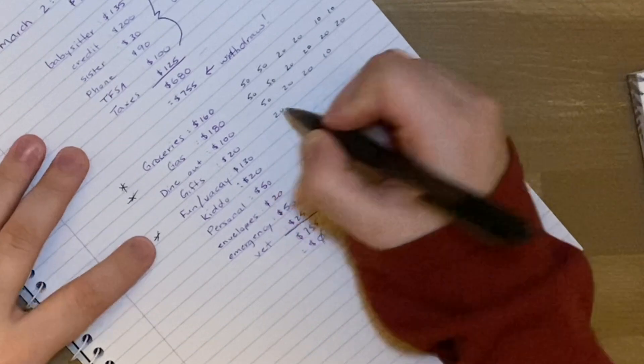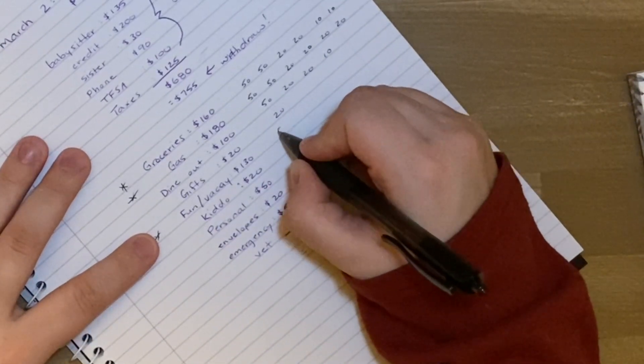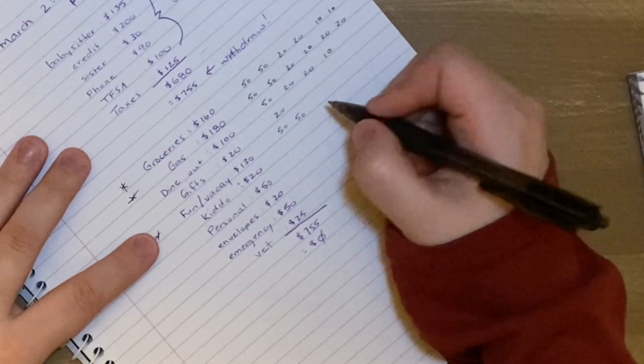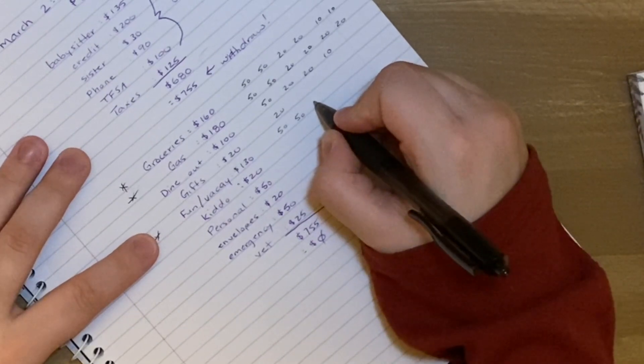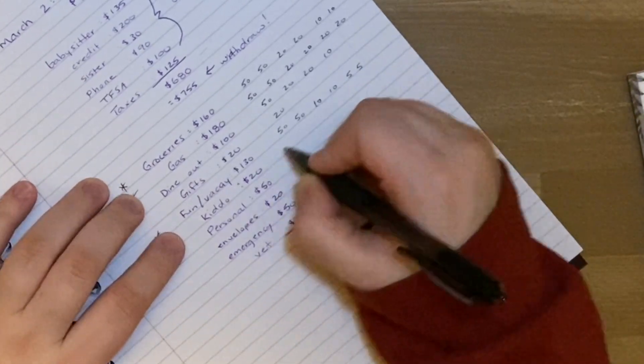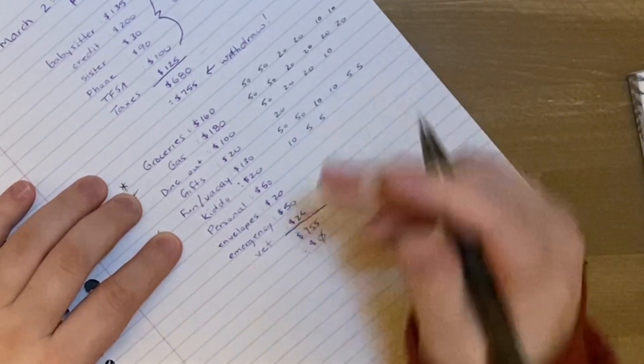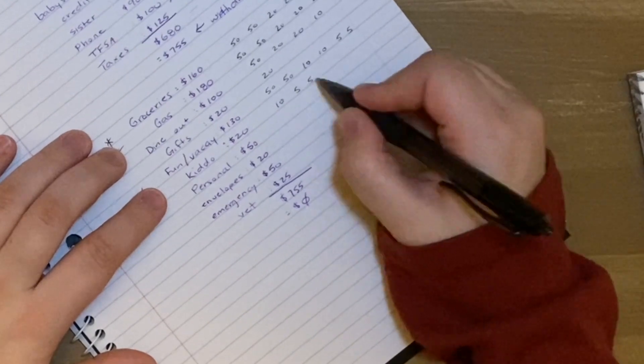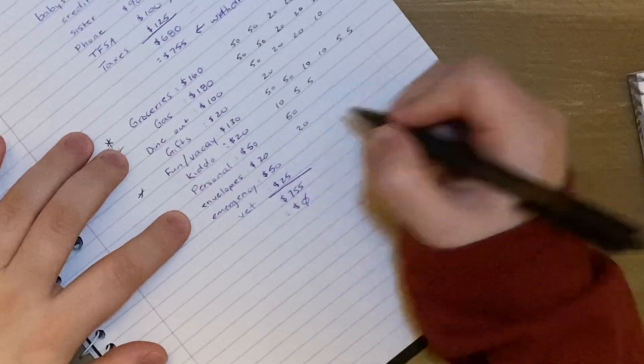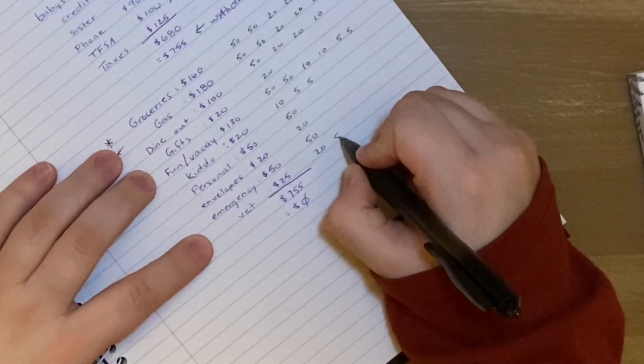Kiddo. I'm going to give him $20. Personal. I'm going to give myself $50. Envelopes. I'm going to put a $20 in there. And then emergency. Put a $50 in there. And then vet. And we're going to do $25, which puts us at a total of $755. Our total income budget was $1,435. So we'll just cross like that. So then we've got total expenses, $1,435. And then that makes the difference of $0.